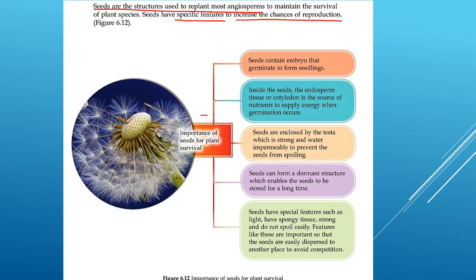Seeds have specific features to increase chances of reproduction. First, seeds contain an embryo that germinates to form seedlings. Second, inside the seed, the endosperm tissue or cotyledon is the source of nutrients to supply energy when germination occurs. Third, seeds are enclosed by the testa, which is strong and water-impermeable to prevent the seed from spoiling.